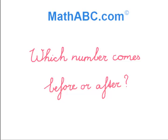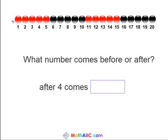Which number comes before or after? We see here a string of beads, and the string of beads is nicely numbered for us, from 1 to 20. So we know there are 20 beads in total. This will help us solve the coming problems.